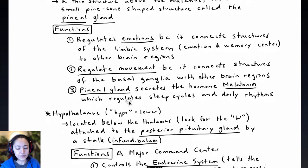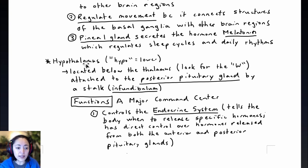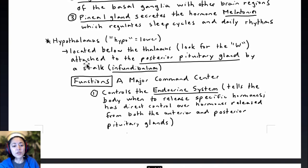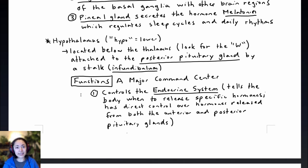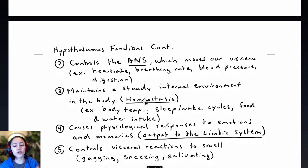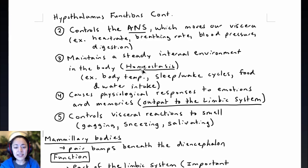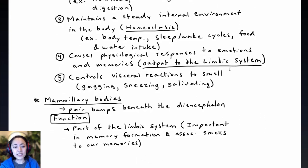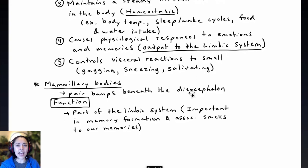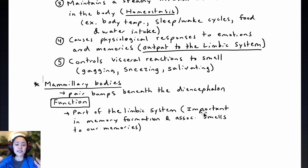The diencephalon also consists of the hypothalamus, located below the thalamus and attached to the posterior pituitary gland by the infundibulum. The hypothalamus is a major command center: it controls the endocrine system, the autonomic nervous system, maintains homeostasis in the body, serves as the output to the limbic system, and controls visceral reactions to smell such as gagging, sneezing, and salivating. Finally, the mammillary bodies are paired bumps visible on the inferior view of the brain, playing a role in memory formation and associating smells to memories, and are considered part of the limbic system.